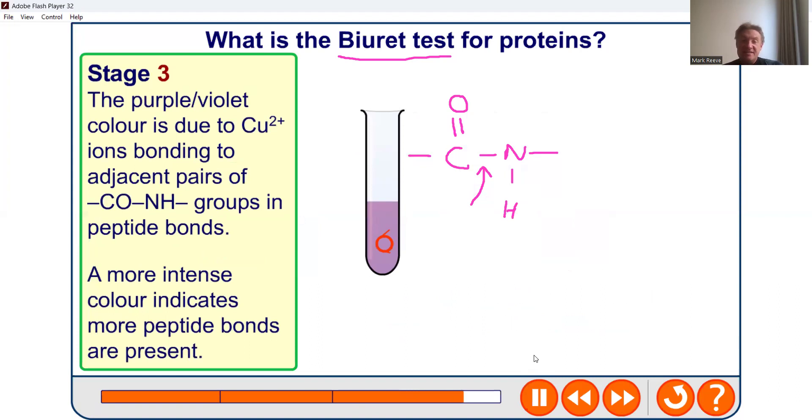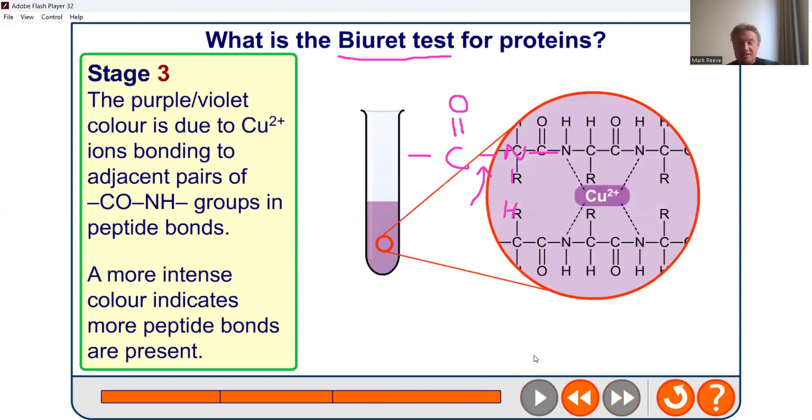Now this is a partly quantitative test. It's not as quantitative as the Benedict's solution test, but the more intense purple color will indicate there's more protein present, and it's formed basically by the lone pairs of electrons on these nitrogens forming complex bonds to the copper two plus ion.